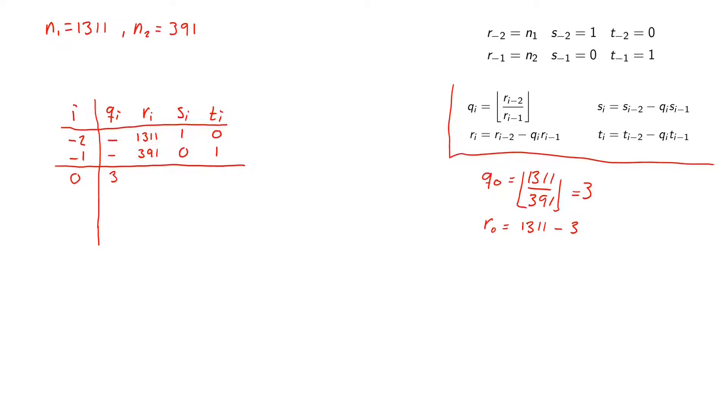r_0 will be equal to r_{i-2} which is 1311 minus q_i which is the 3 that we just computed times r_{i-1} which is 391. So this is the remainder when we divide 1311 by 391. So this will be 138. s_0 will now be updated according to this expression. So it will be s_{i-2} which is 1 minus q_i which is 3 times s_{i-1} which is 0. So this will be equal to 1. So here we write 1.